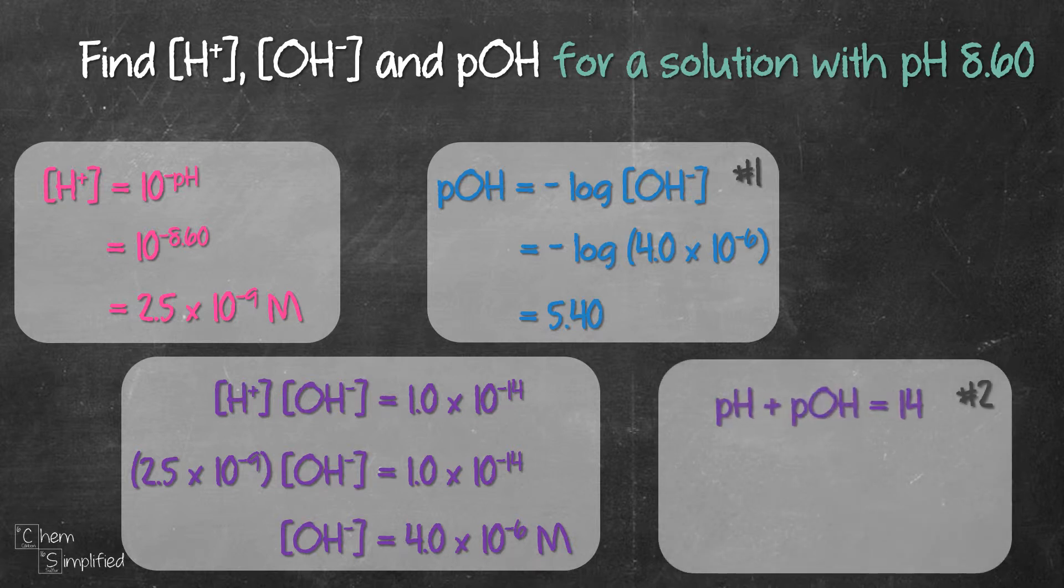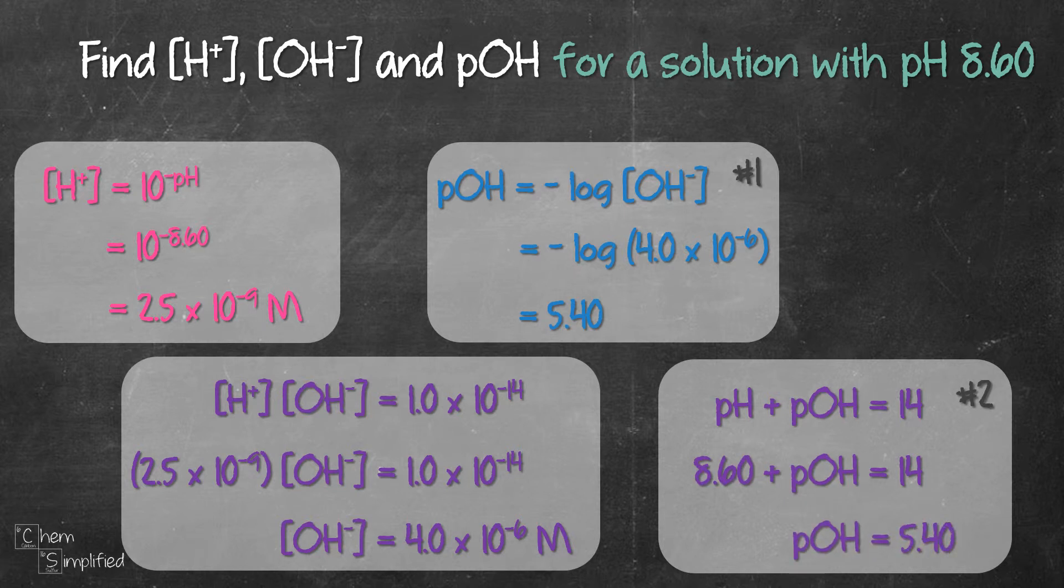Now this is one way to find pOH from OH-. Another way is to find it directly from the pH. That was the second formula I mentioned earlier. So we plug in the given pH and we get 5.40. Both values for pOH should be the same regardless of the method we use.